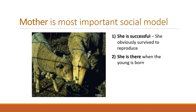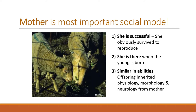Secondly, she's there when an animal is born. There's an innate connection to a large animal that's near one when they're born. She's already given information through amniotic fluid, and now she'll give it through milk and through being there. Finally, she has similar attributes as the young — a similar physiology, morphology, and neurology. So she's a good model because she's similar to the young animal.